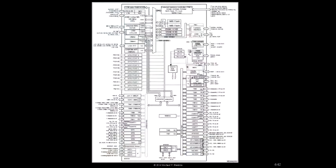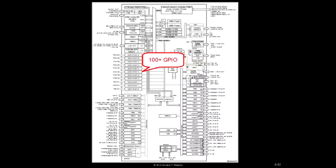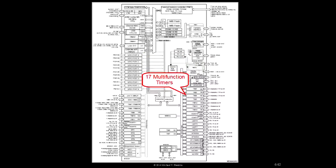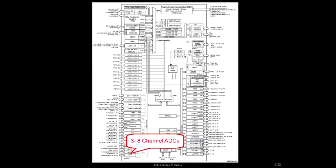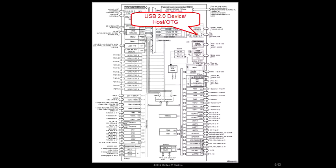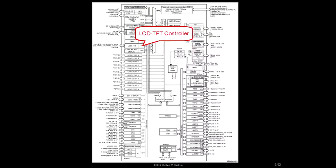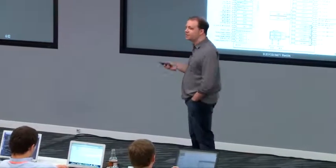This is the block diagram of an STM32F4 microcontroller — this, my friends, is a system on a chip. It has flash memory, SRAM, 100-plus GPIO pins (actually closer to 140), 17 multifunction timers with PWMs and motor control, eight UARTs, three I2C ports, three 8-channel analog-to-digital converters, two digital-to-analog converters, USB 2.0 host/device/on-the-go, Ethernet MAC, LCD TFT controller, and more — including random number generators, hardware cryptography, and CRC. I haven't even gone through 50-60% of the peripherals.